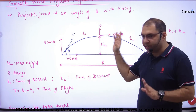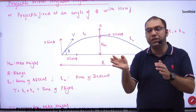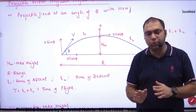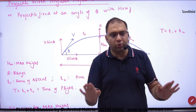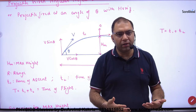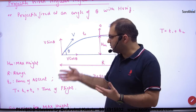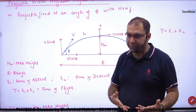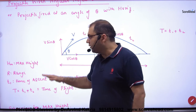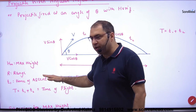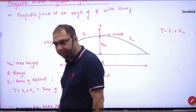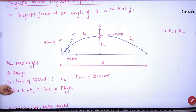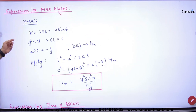I will prove that time of ascent T1 is always equal to time of descent T2. Now what we will do is derive the expression for each topic: what will be the expression for maximum height, what will be the range, what will be T1, T2, and capital T — time of flight. This is our job. So the first topic is the expression for maximum height.